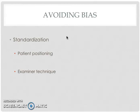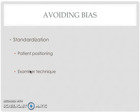Two key elements of standardization are patient positioning — every manual muscle test has a specific optimal patient position — and examiner technique, meaning we apply manual resistance the same way every time, so that we can compare findings among various therapists and among the same therapist over time.